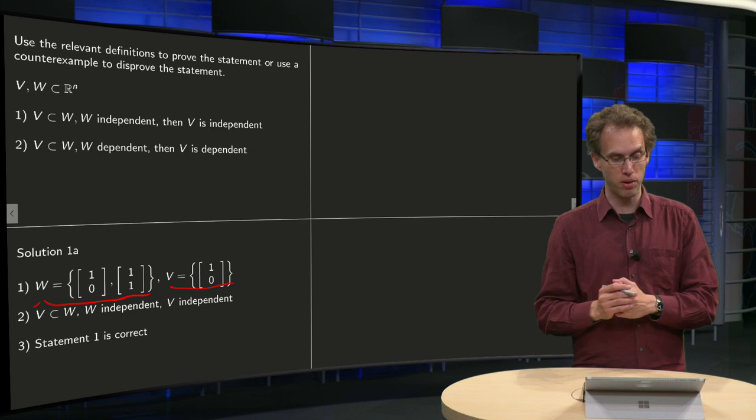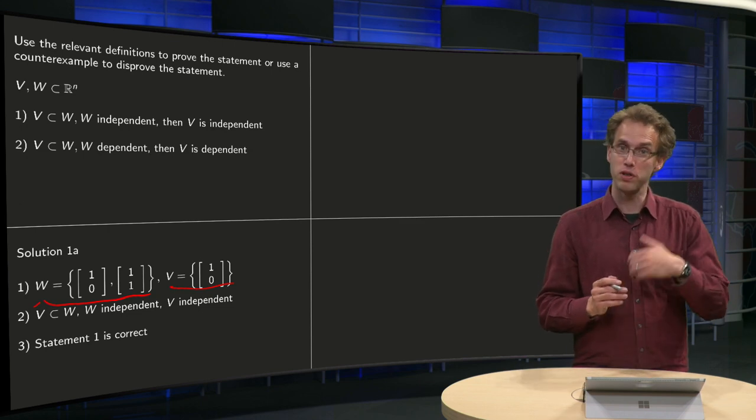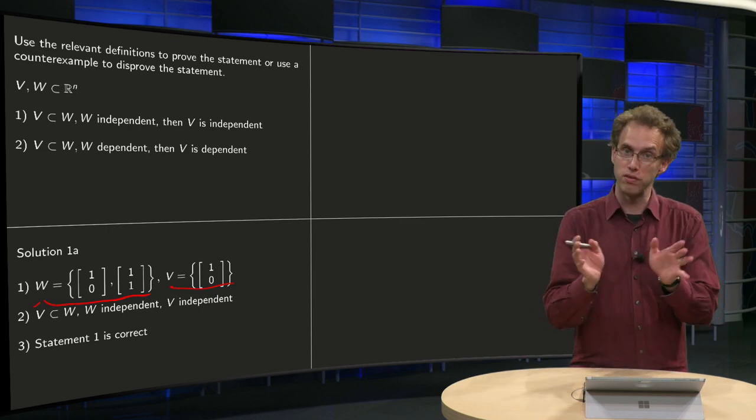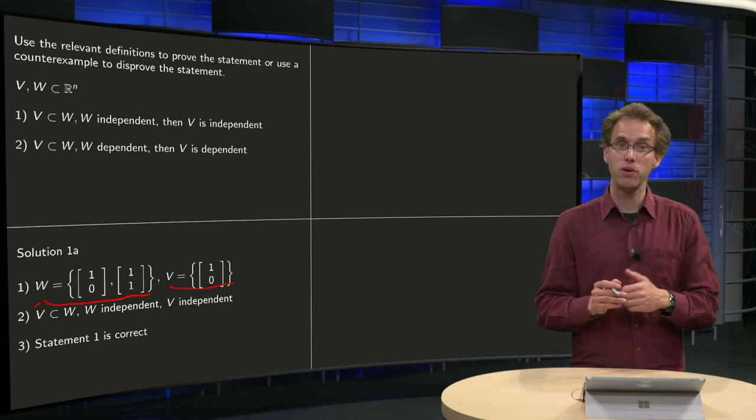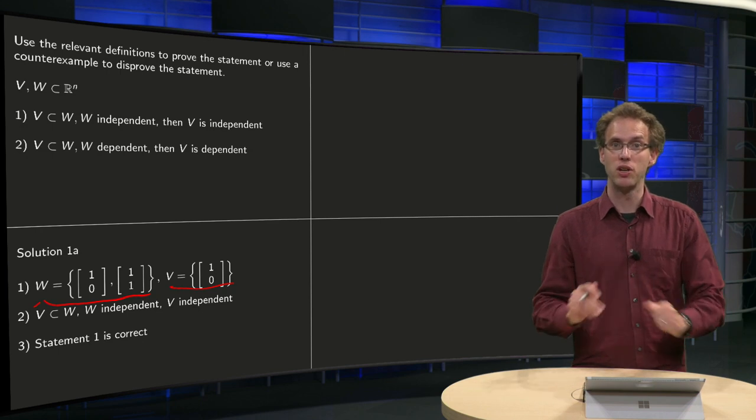then we see V is a subset of W, we see W is independent, the vectors are not multiple of each other, V is independent, it contains only one vector, so we can now conclude that statement 1 is correct.